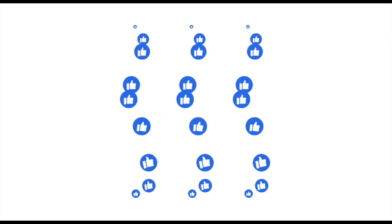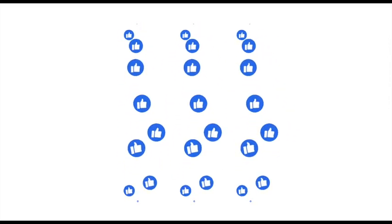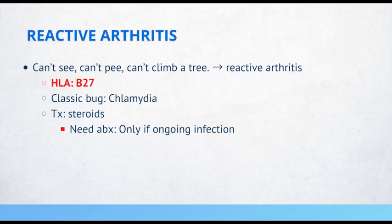Reactive arthritis — can't see, can't pee, can't climb a tree. That's what we use to remember reactive arthritis. This is typically associated with HLA-B27, and the classic bug is Chlamydia. We treat these patients with steroids, and we only give antibiotics if there is an ongoing infection.